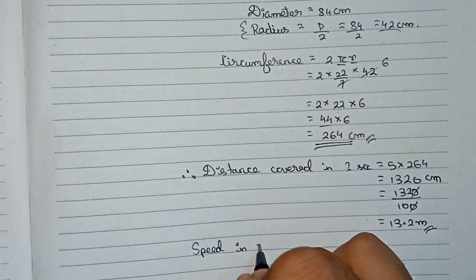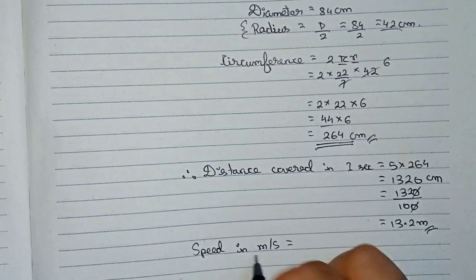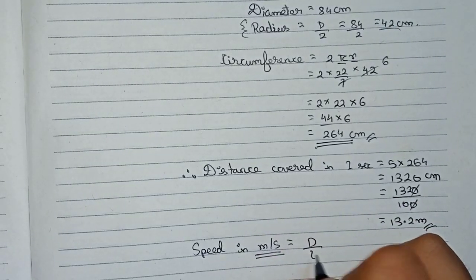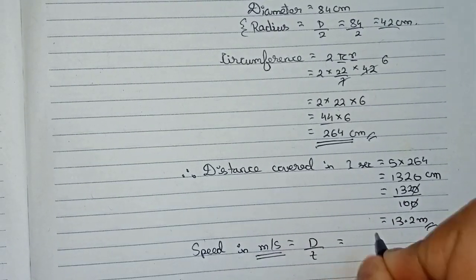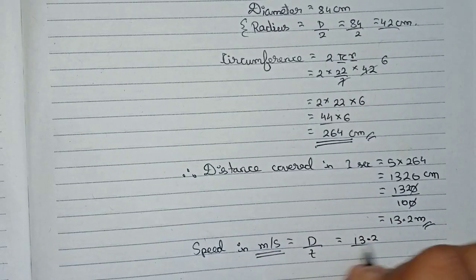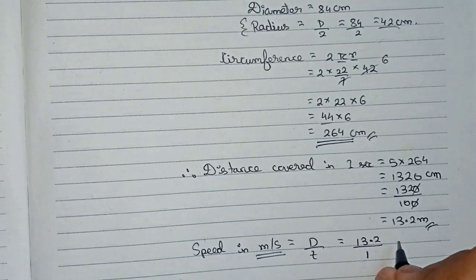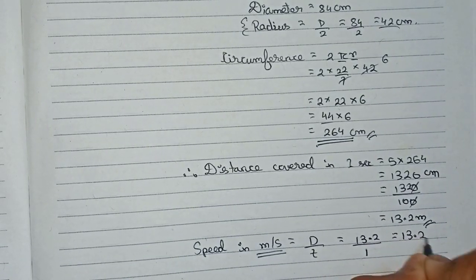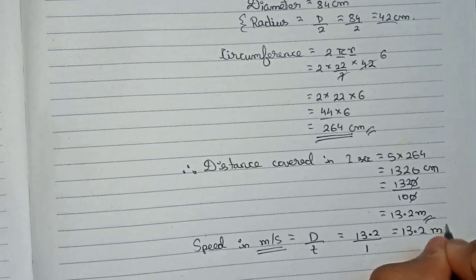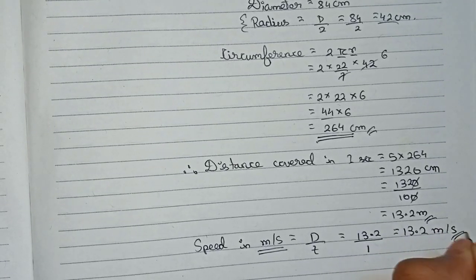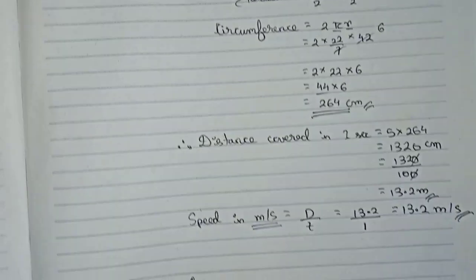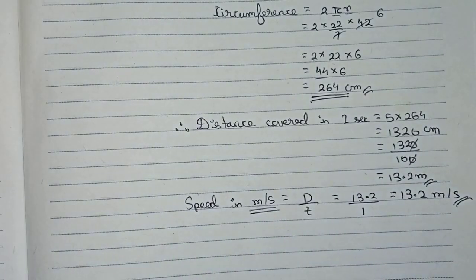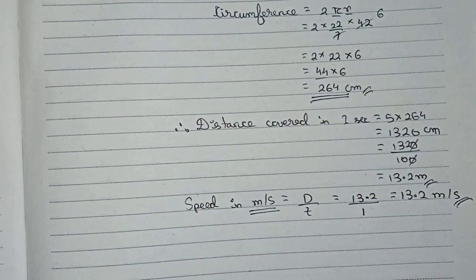Speed equals distance divided by time. Our distance is 13.2 meters and time is 1 second, so our speed is 13.2 meters per second. The question asks us to find the speed in kilometers per hour.